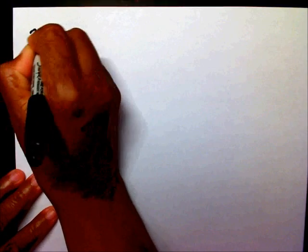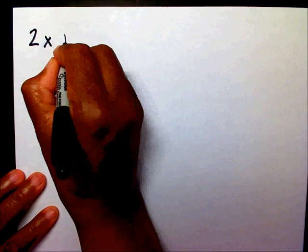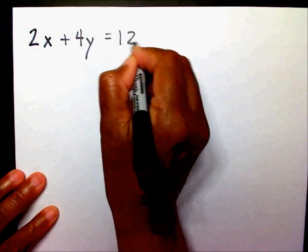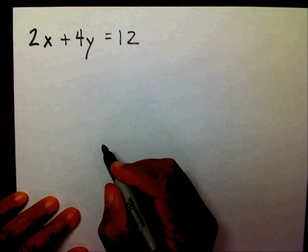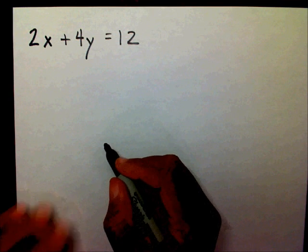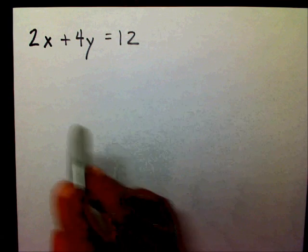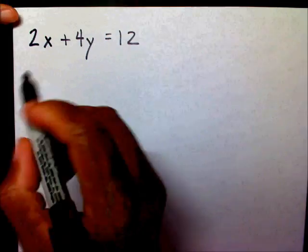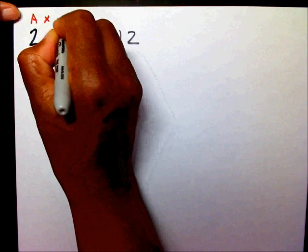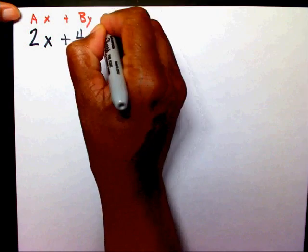So let's find the first one. If I gave you 2x plus 4y equals 12 — since this is in standard form, and the reason why this is in standard form is because you have your ax plus by equals c.